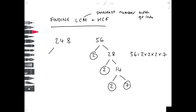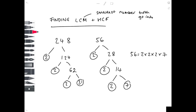Let's do the same with 248. Divide by two to get 124, divide by two to get 62, divide by two to get 31. And 31 is actually a prime number as it's only divisible by itself and one. So we circle all the prime numbers and write out 248 as a product of prime factors. If asked to write it as a product of prime factors, that is your answer — you don't need to do anything else.